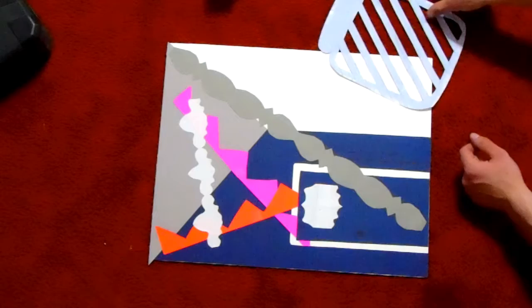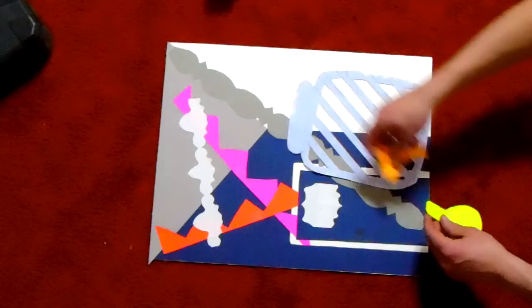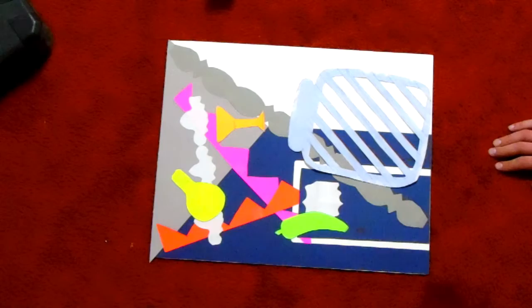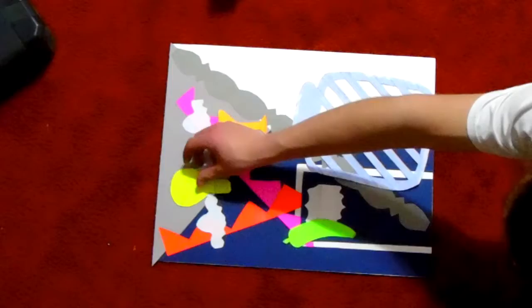Okay, so when you finish cutting out all of your pieces, you can start arranging them on the piece of paper and see how you want it. Try a few different options, see what works best for you. And then once you figure out how you want it, you can go ahead and glue it down.